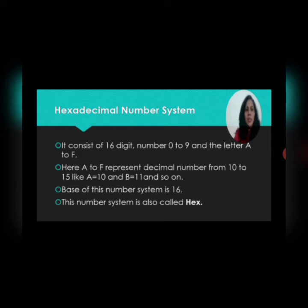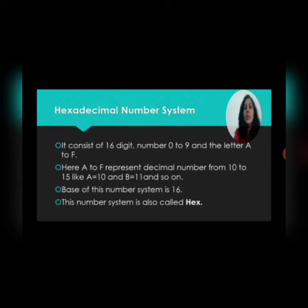F is equal to 15. The base of the hexadecimal number system is 16 because it includes 16 digits. The base of decimal is 10 because it includes 10 digits, the base of binary is 2 because it consists of 2 digits, the base of octal is 8 because it consists of 8 digits, and here the base of hexadecimal is 16 as it includes 16 digits in it.